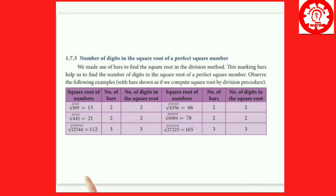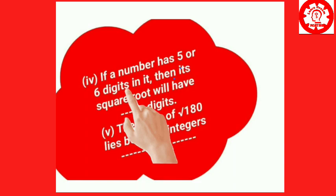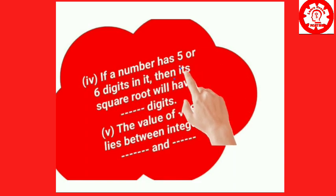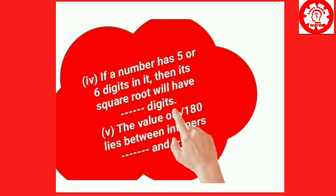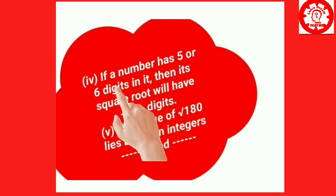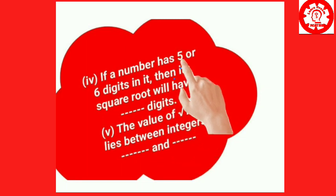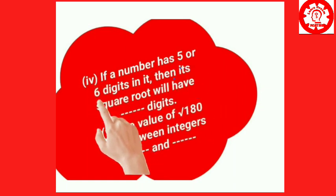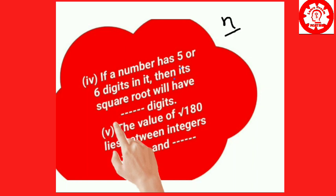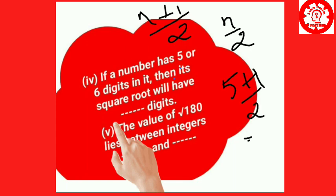Now we will answer the first question: if a number has 5 or 6 digits, then its square root will have how many digits? For 5 digits — it is an odd number, so use (n+1)/2: 5 plus 1 by 2 equals 3. For 6 digits — it is an even number, so use n/2: 6 divided by 2 equals 3. So in both cases, the answer is 3 digits.